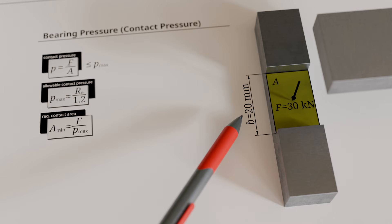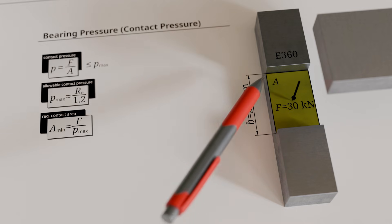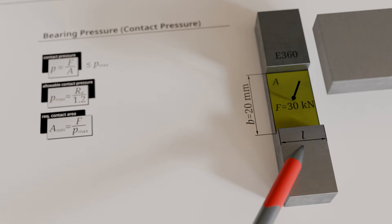Both components are made of the unalloyed steel grade E360. In the following, we determine the minimum required length L of the recess to ensure that the allowable bearing pressure is not exceeded.